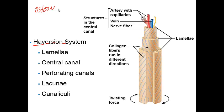These osteons are really the tiny weight-bearing pillars — very important pillars that are going to absorb a lot of force. We're seeing an exploded view here, a group of hollow tubes of the bone matrix itself, and each matrix tube is called a lamella.